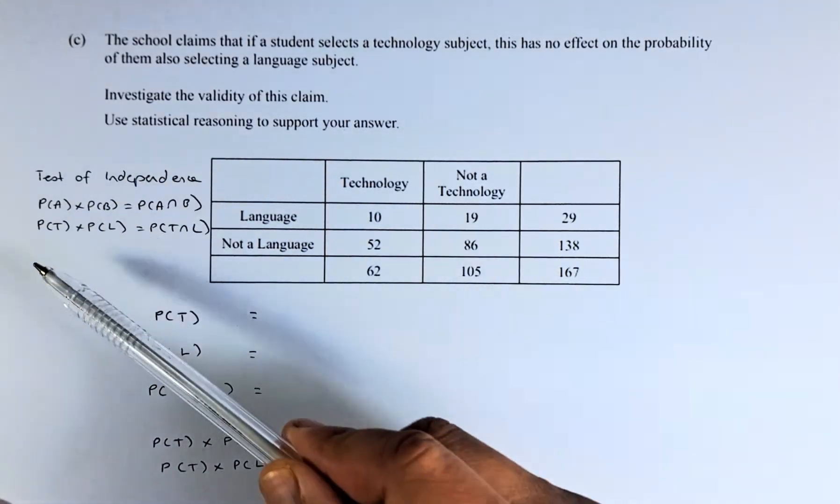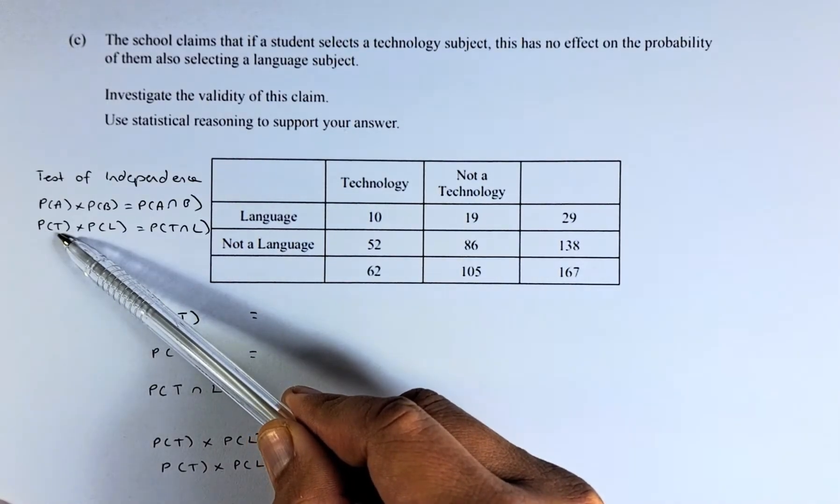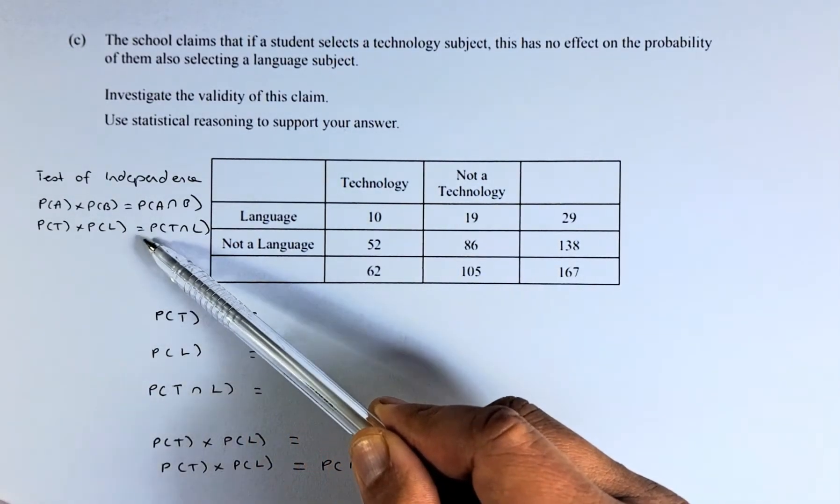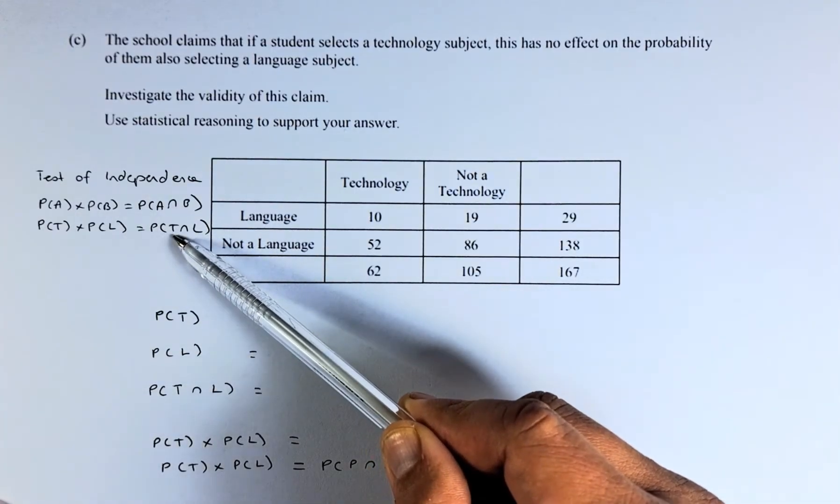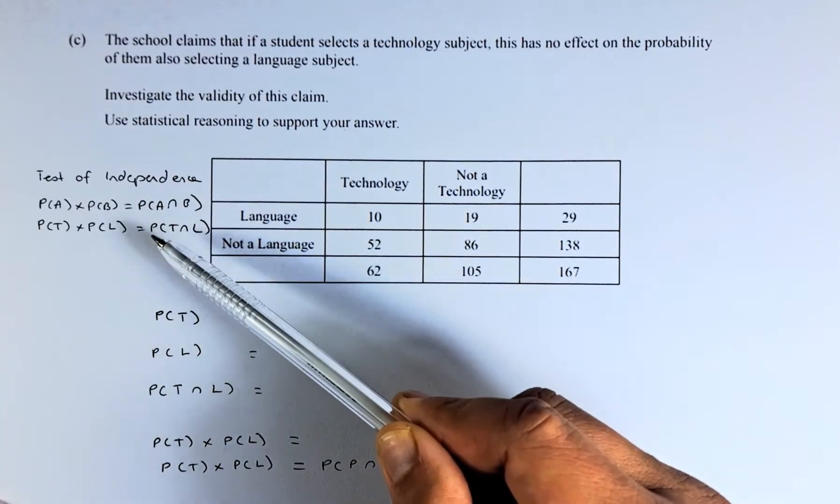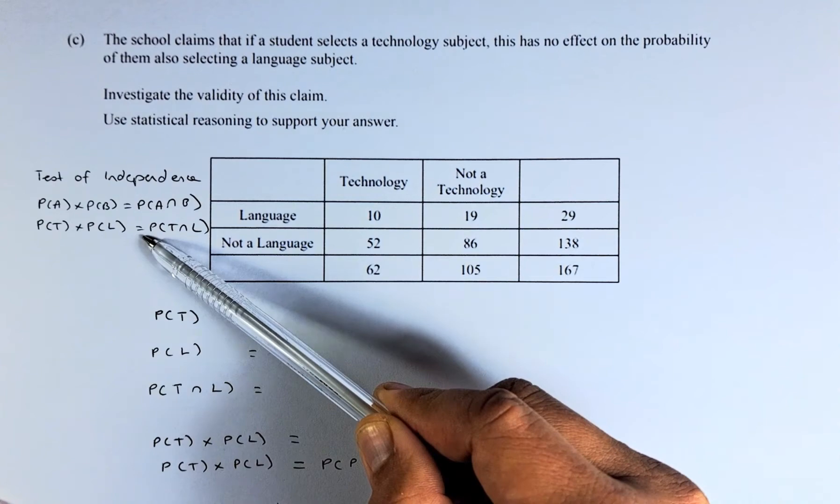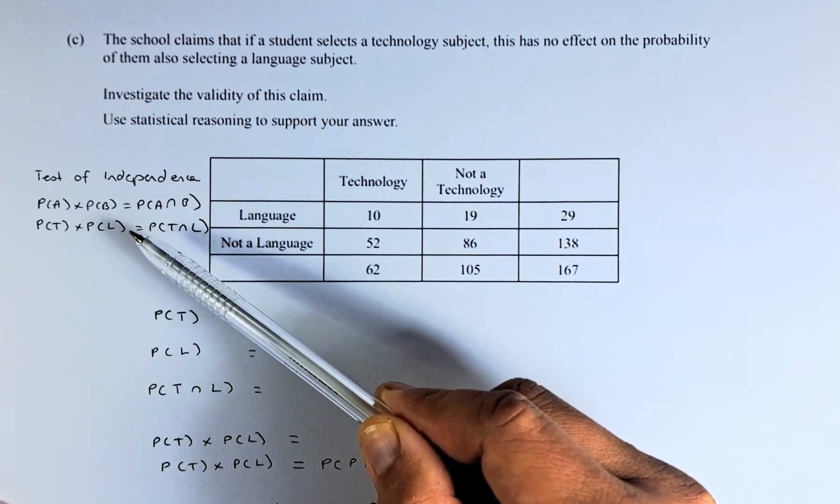In our case, we talk about technology subject. Probability of technology times probability of language, if they are equal to probability of technology and language, they are independent. If they are not equal, they are not independent.